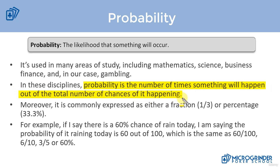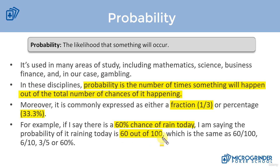For example, we can say that there's a 33.3% chance of it raining today. It's most commonly referred to as either a fraction, such as one-third, or a percentage, such as 33.3% — these two are exactly the same. So if we say there is a 60% chance of rain, from a probability perspective, that means 60 out of 100, which we can reduce to six-tenths, or further to three-fifths, or simply say 60% chance of rain.